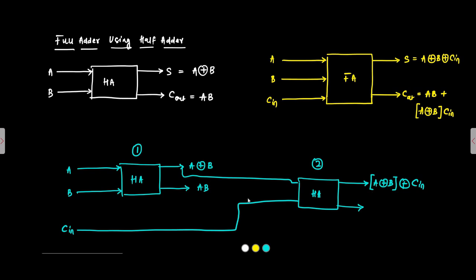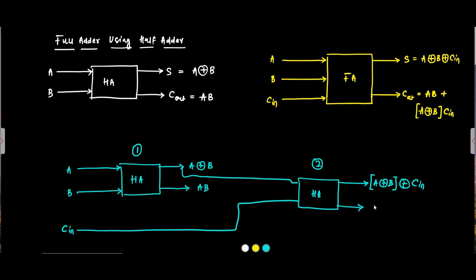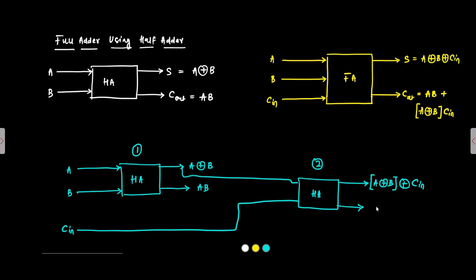The carry output of the second half adder will be the product of its two inputs, that is (A XOR B)·C-in. We have already obtained the sum output of the full adder: A XOR B XOR C-in. Now all we need is the carry output.